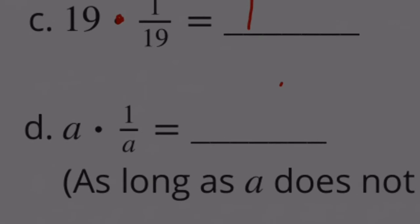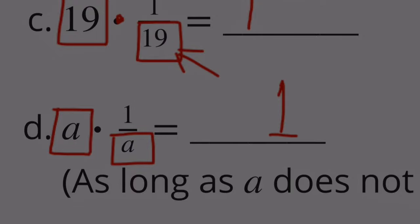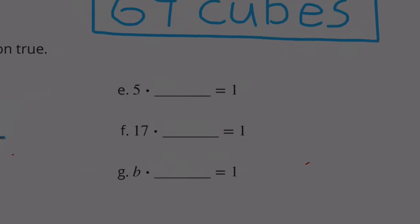Knowing that, we have here 19 times one nineteenth, and of course, that's going to equal one. And then here we have a. Just like 19 was represented here, 19 is represented as the denominator in this fraction. It's going to be the same thing. We have a represented here and a represented as the denominator. Without doing any math, we know that the answer is going to be one, as long as a does not equal zero.